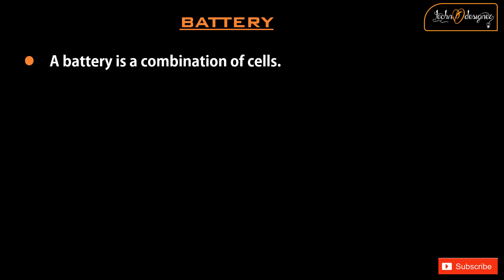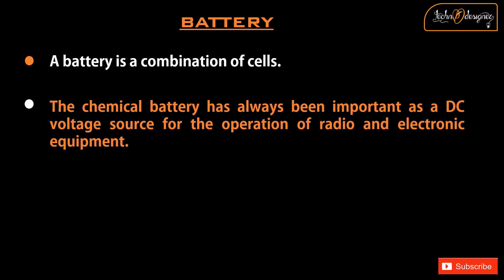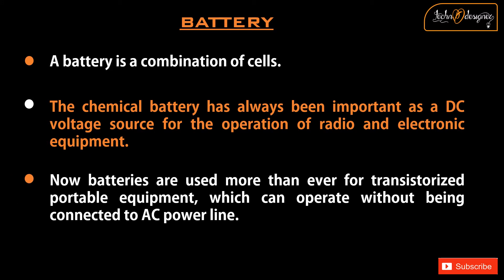A battery is a combination of cells. The chemical battery has always been important as a DC voltage source for the operation of radio and electronic equipment. Now batteries are used more than ever for transistorized portable equipment, which can operate without being connected to an AC power line.